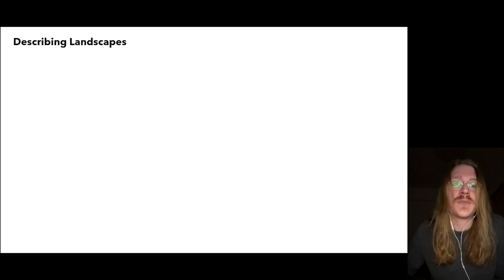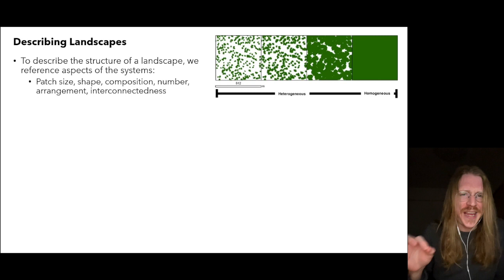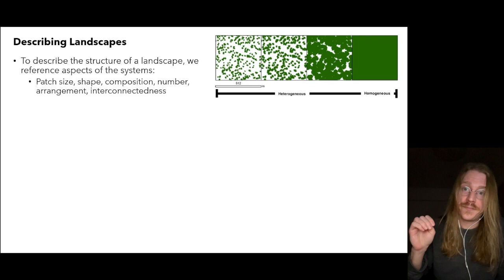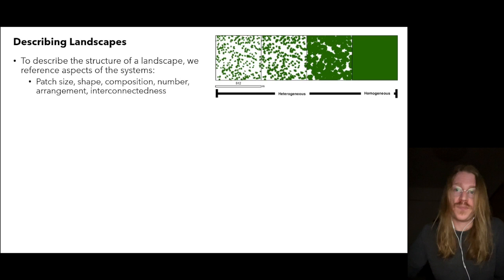When we describe the structure of a landscape, there are quite a few spatial variables we use to reference different aspects of the system. The main ones are patch size, shape, composition, number, arrangement, and interconnectedness. When it comes to arrangement and interconnectedness, there are a few ways to describe the patterns that make up the landscape.